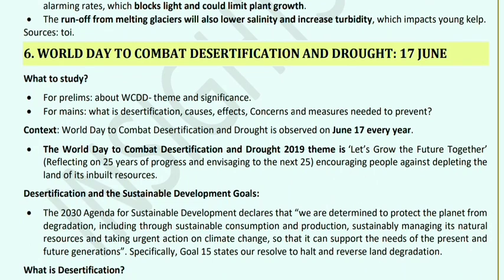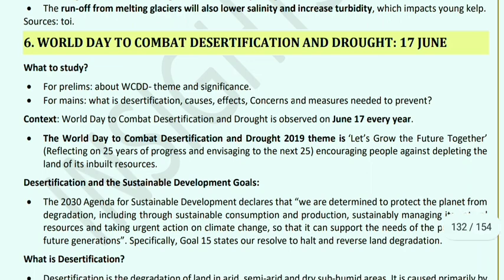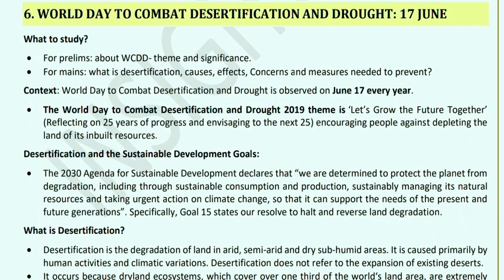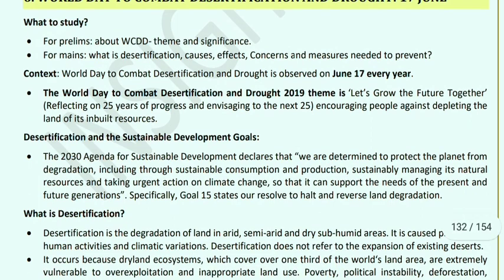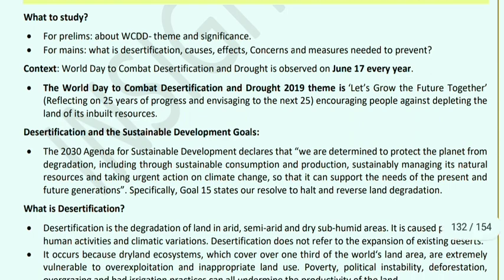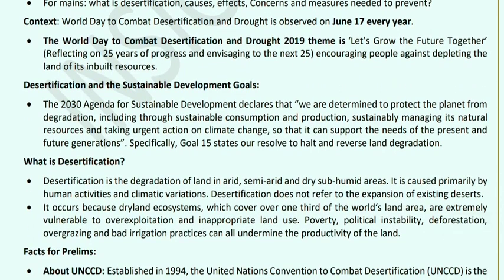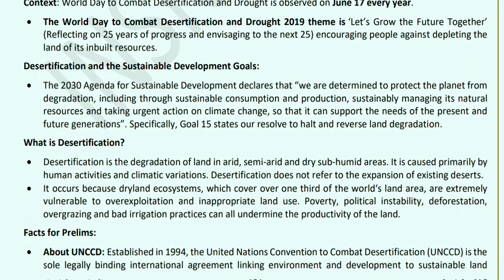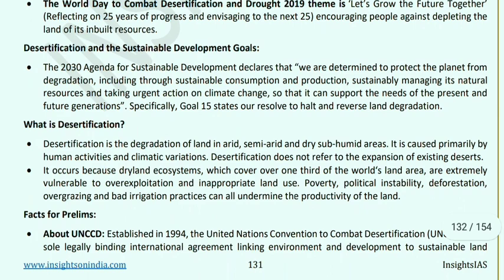World Day to Combat Desertification and Drought is observed on 17 June every year. The 2019 theme was 'Let's Grow the Future Together' — showcasing 25 years of progress. People are encouraged to act against depleting land of its natural resources. Desertification is linked to the 2030 Agenda for Sustainable Development, which declares we will protect the planet from degradation through sustainable consumption, production, natural resource management, and urgent climate action.